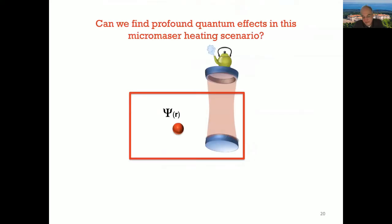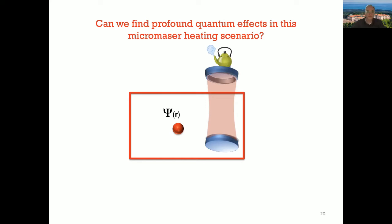So far everything looks like quite stochastic open system dynamics — nothing profoundly quantum mechanical. We send atoms in thermal states, the cavity field thermalizes, and the master equation describes the rates, giving the temperature depending on population of energy levels. The only quantum thing is having energy levels — belonging to the first quantum revolution, nothing to do with the second quantum revolution or quantum technologies. Can we find more profound, modern quantum mechanical effects here?